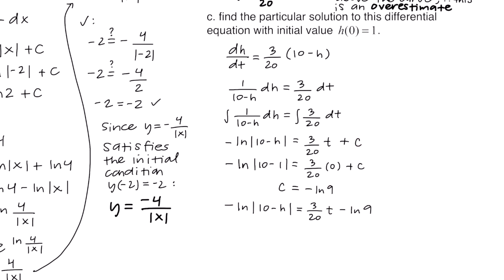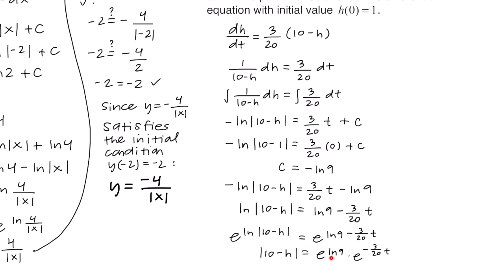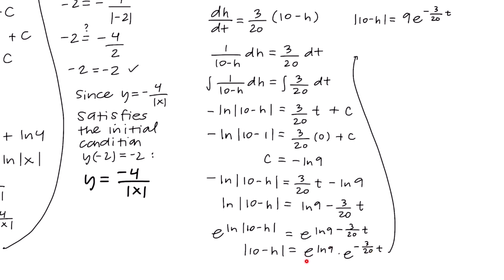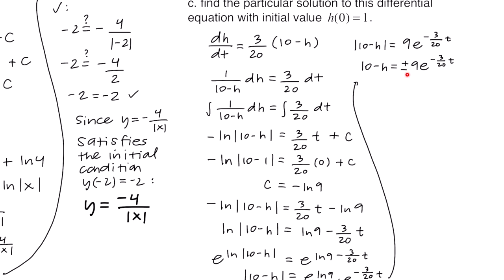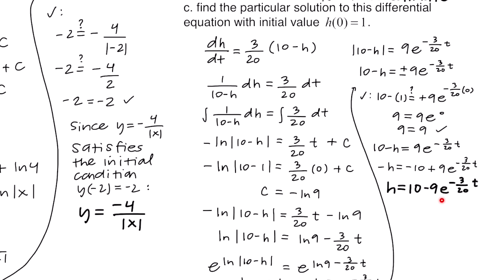Substituting c = -ln 9 and multiplying by -1 gives ln|10 − h| = (3/20)t + ln 9. Exponentiating both sides using base e and splitting the right side: |10 − h| = e^(ln 9) · e^(-(3/20)t) = 9e^(-(3/20)t). Checking the initial condition with the positive option: 10 − 1 = 9, which equals 9e⁰ = 9. It checks out. Solving for h: h = 10 − 9e^(-(3/20)t).